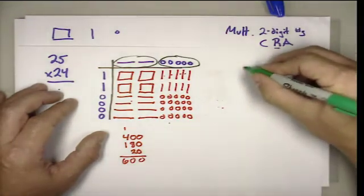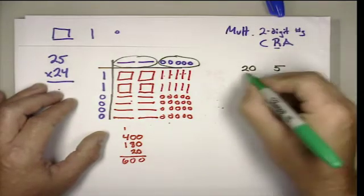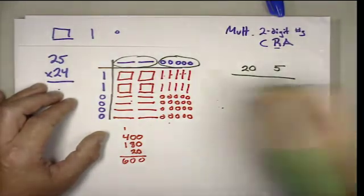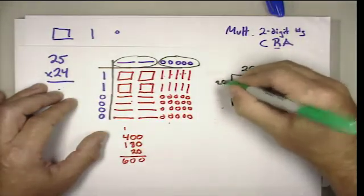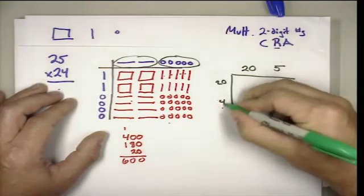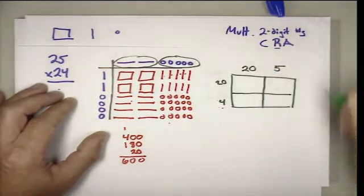So what I can do is actually write those values. Two tens is twenty, and five ones is five. I am going to do the same thing with twenty-four, decomposing it based on place value. That's twenty and four.